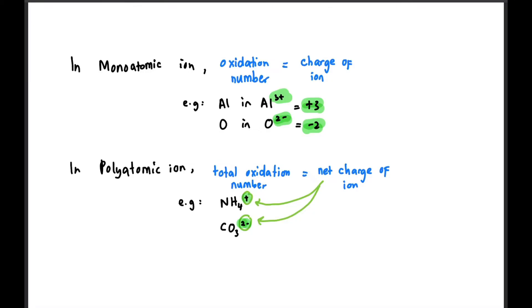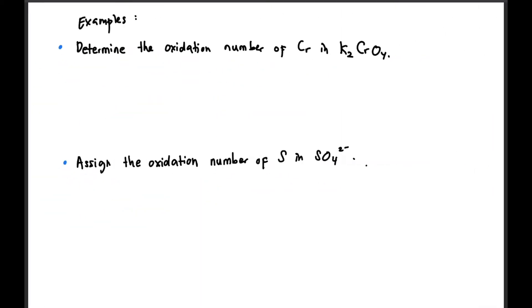Now let's try this example: determine the oxidation number of Cr in K₂CrO₄. So we have 2K + Cr + 4 oxygen equals to zero. The net charge for the whole compound is zero. K is +1 always because it's Group 1, while oxygen is -2. We just replace the numbers there and then we get +6 as the answer for oxidation number of Cr.